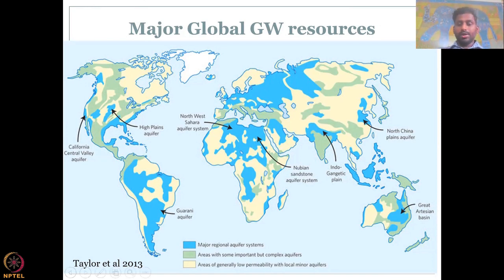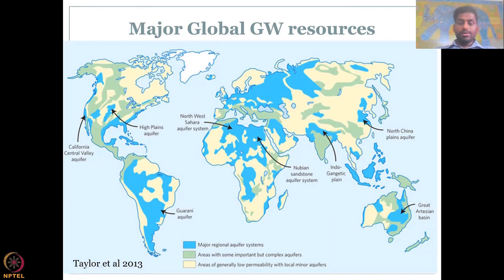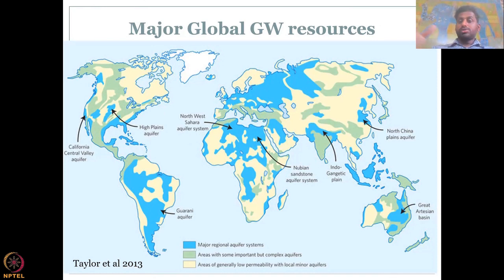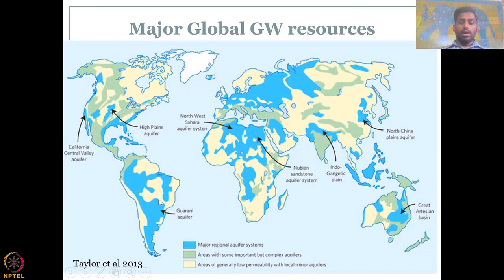Areas of generally low permeability and local aquifers — very small, localized aquifers — are present in the rest of the world. In regions like Greenland and other areas, there are fairly complex or mostly localized groundwater systems. With local aquifers, there is a lot of complexity — groundwater status and how much water you can extract might differ from one location to another because the properties change. Taylor et al. shows this in China and most parts of the Americas — a very locally variable aquifer system where you cannot apply one recharge rate or yield rate uniformly.